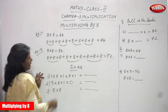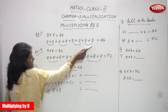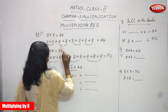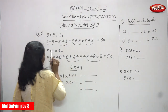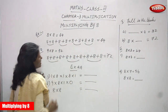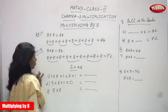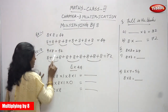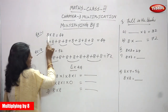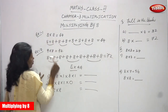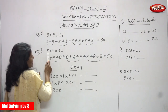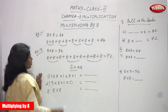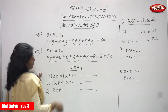8 eights are 64, so 8 nines are 72. 8 eights are 64 and 8 nines are 72.